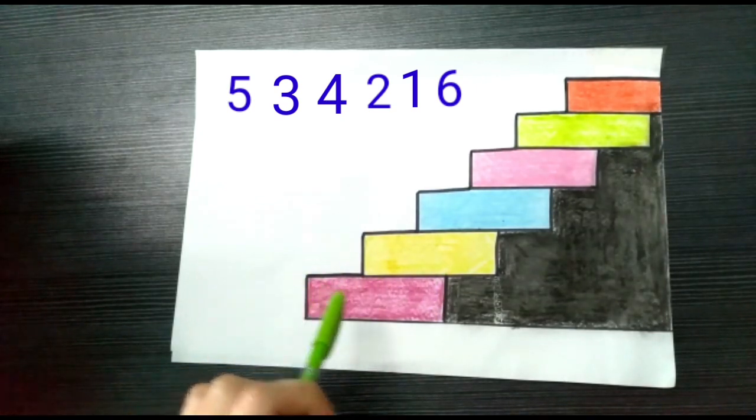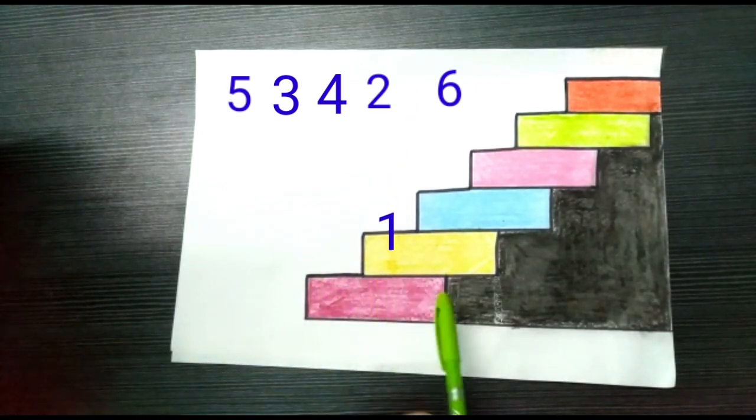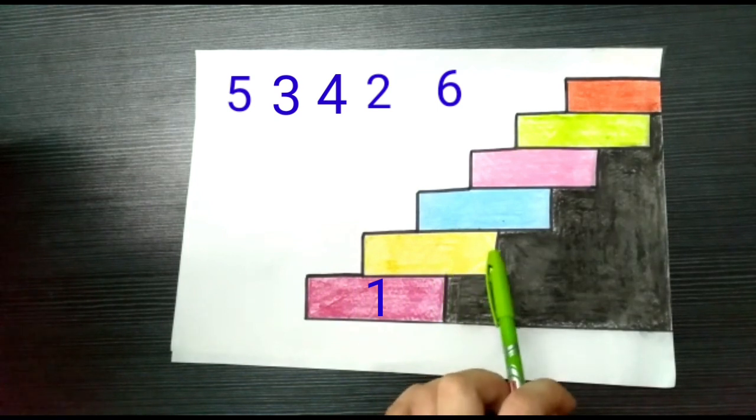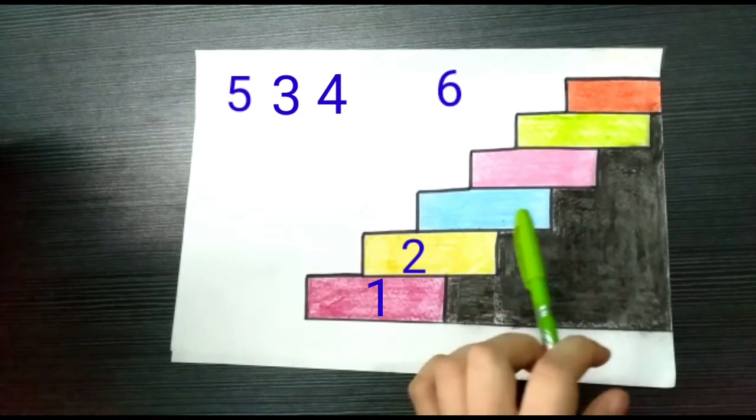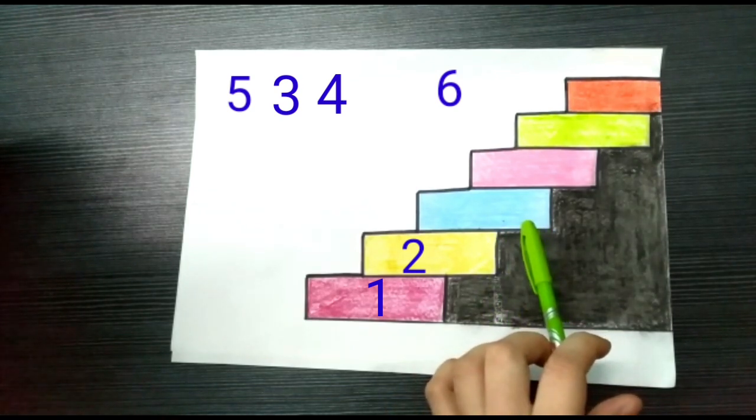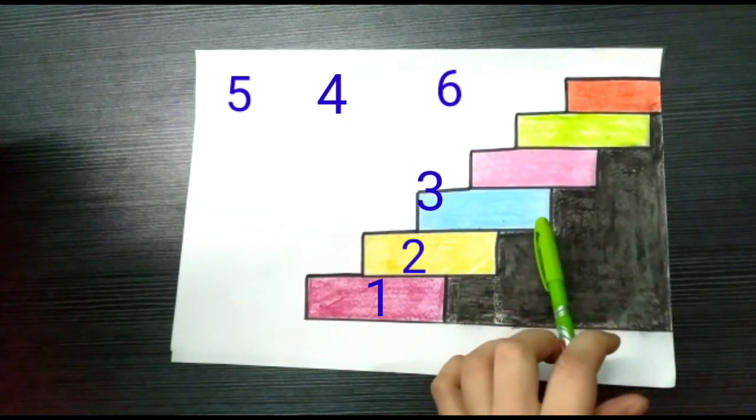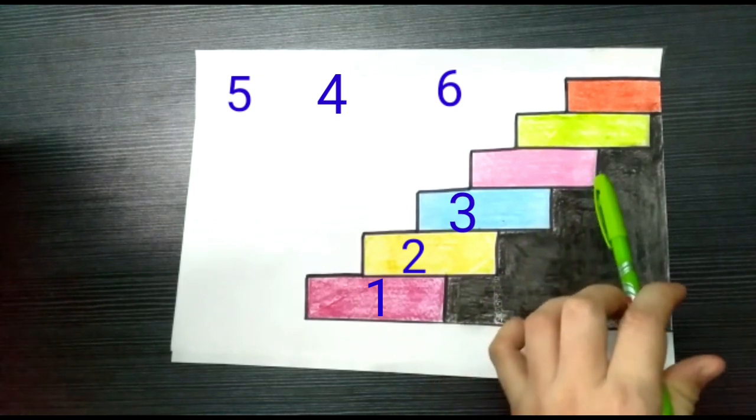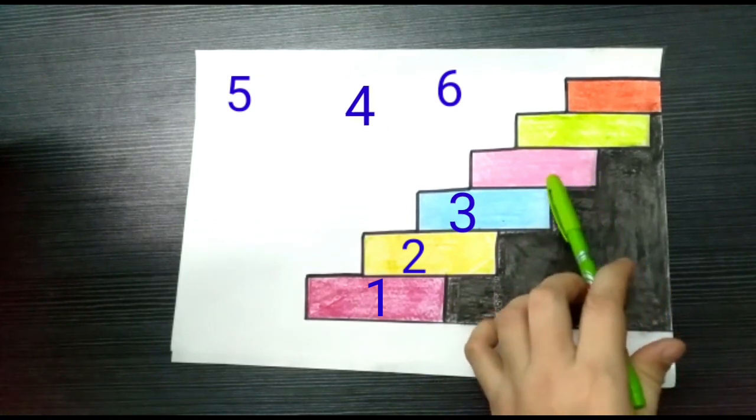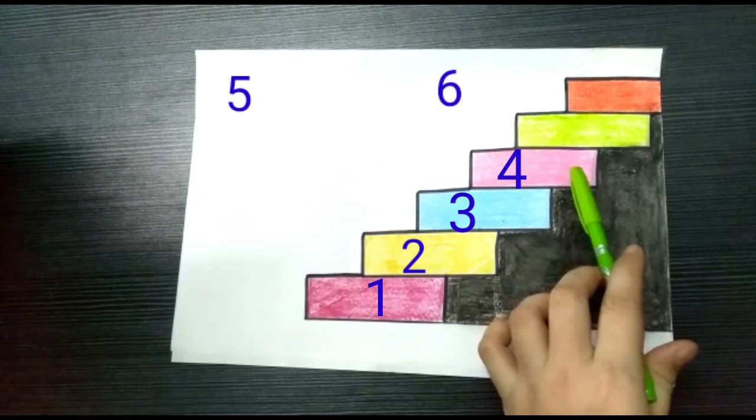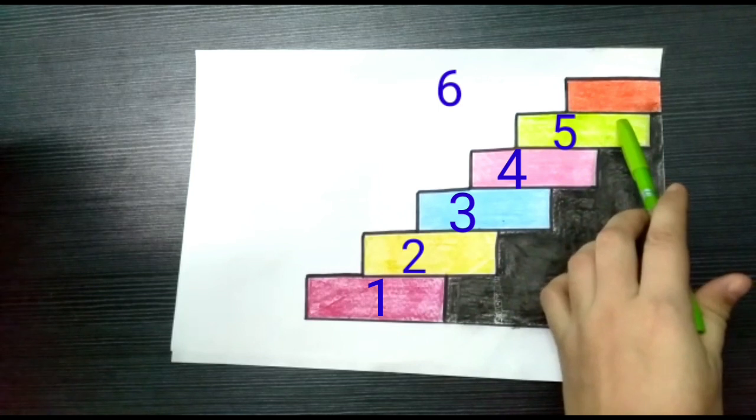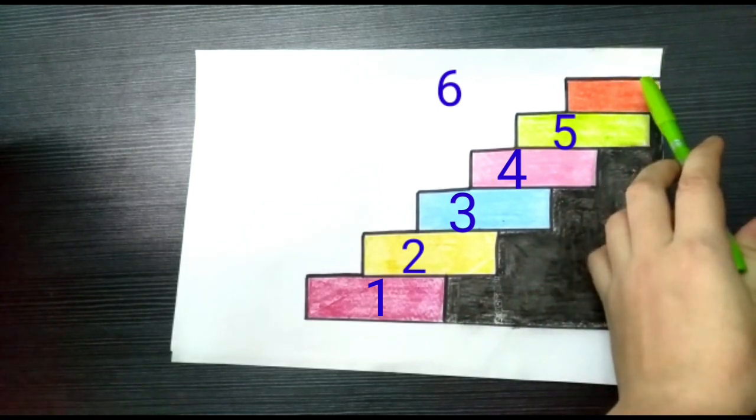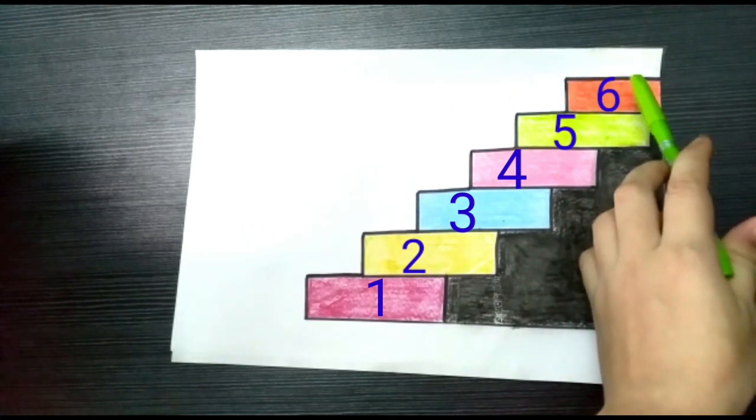Here we go. The red step is number 1. The next yellow step is number 2. That's right. Then comes the blue step which is number 3. Very good. Followed by the pink step which is number 4. The green step is number 5, and the last orange step is number 6. Very good.